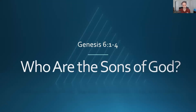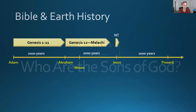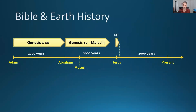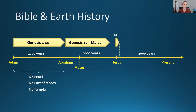We're still in the book of Genesis. There's so much to talk about in those first 11 chapters. Today we're talking about this topic: who are the sons of God in chapter 6? There's a very unusual passage in chapter 6 that causes a lot of confusion and misunderstanding. We're going to straighten out this question — who are the sons of God? We're looking at these first 2,000 years of Bible history, compacted into 11 chapters, when there was no Israel, no law of Moses, no temple.